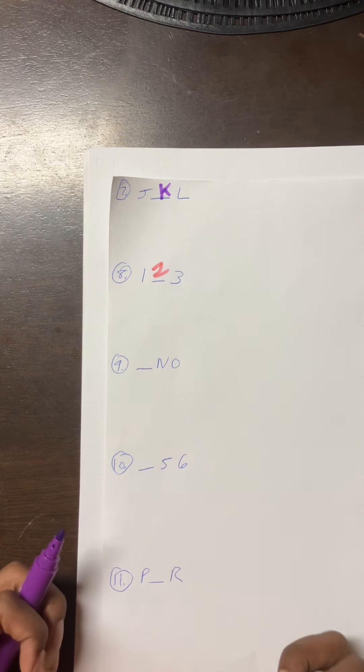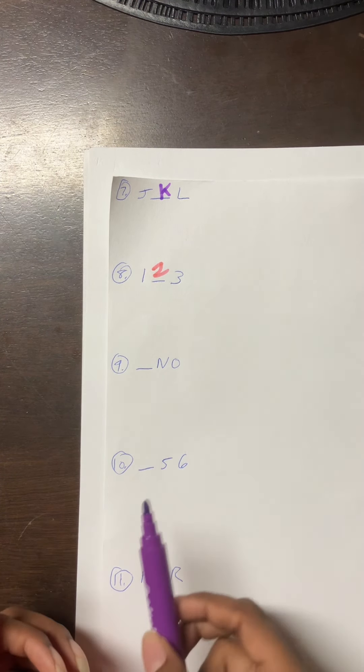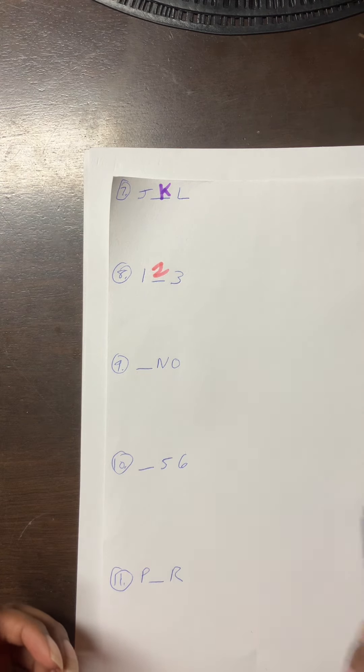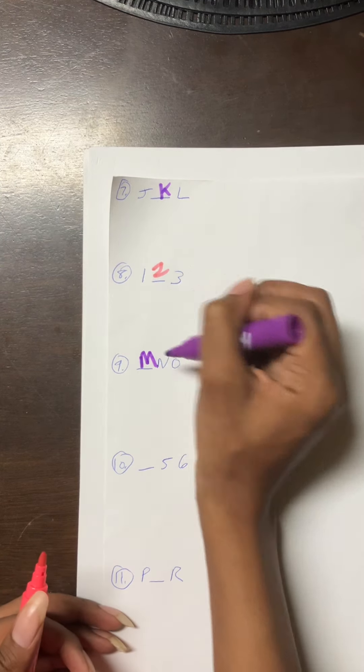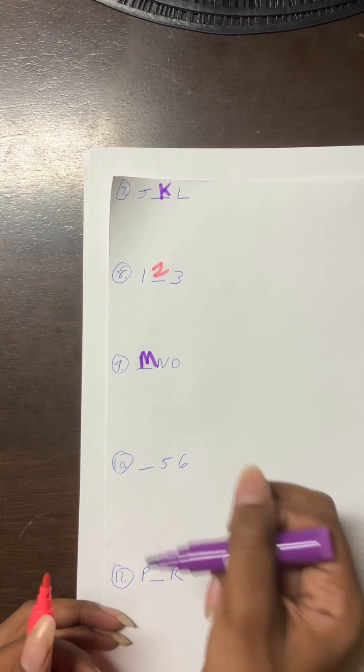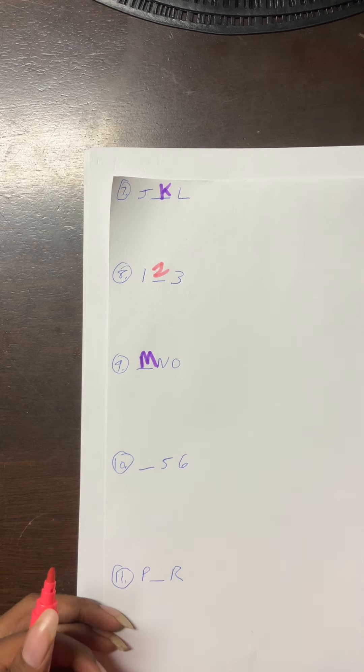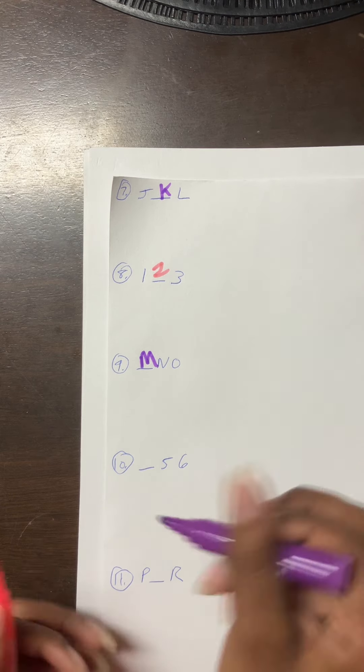Number nine: blank NO. So it's A B C D E F G H I J K L M. Next: blank 56. So it's one two three four five six. We're gonna write four right here.